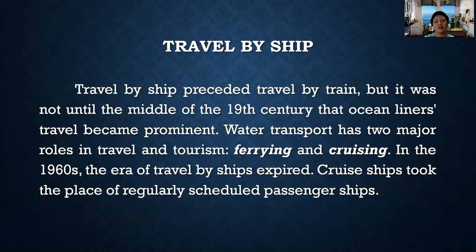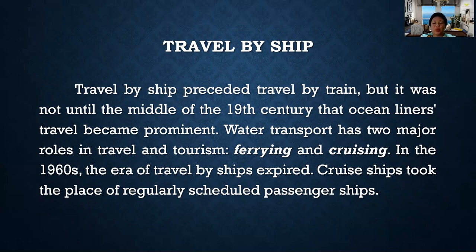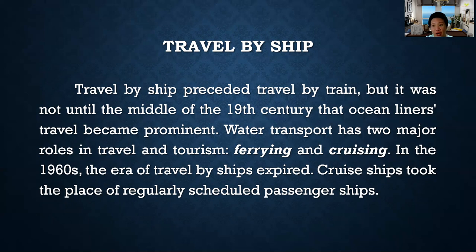Next is travel by ship. Travel by ship preceded travel by train, but it was not until the middle of the 19th century that ocean liner travel became prominent. Water transport has two major roles in travel and tourism: ferrying and cruising. In the 1960s, the era of travel by ships expired and cruise ships took the place of regularly scheduled passenger ships. Ferrying is purely transporting passengers from one port to another, while cruising means the main purpose is for passengers to have fun and recreation.